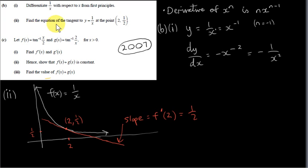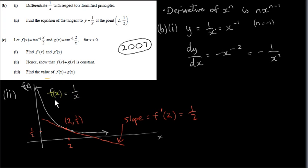In part two, we want to find the equation of the tangent to y equals 1 over x at the point (2, 1/2). Here's a graph of 1 over x — it's in the shape of a hyperbola — and we want the tangent at the point (2, 1/2). Plugging 2 in for x gives f of 2 equals 1 over 2, confirming the point is on the curve. To get the slope of this tangent, we evaluate the derivative at x equals 2.